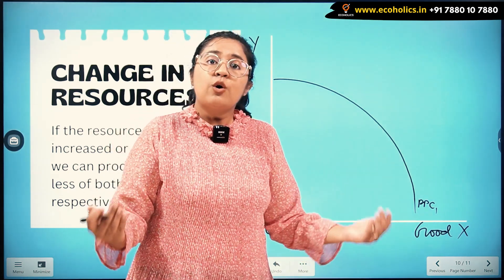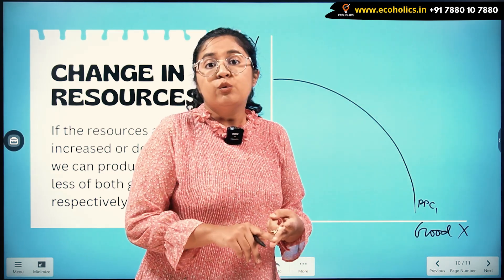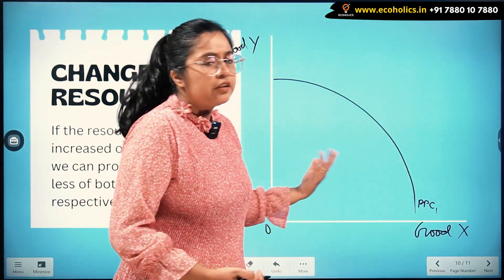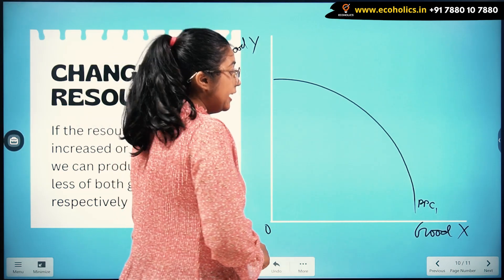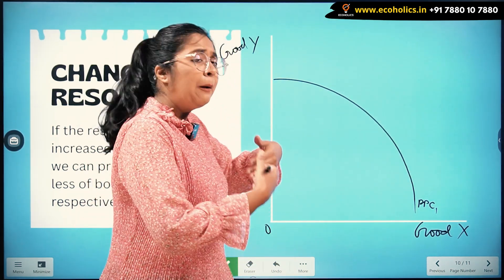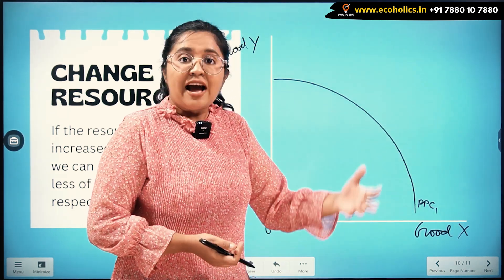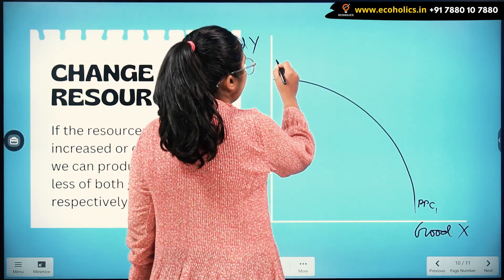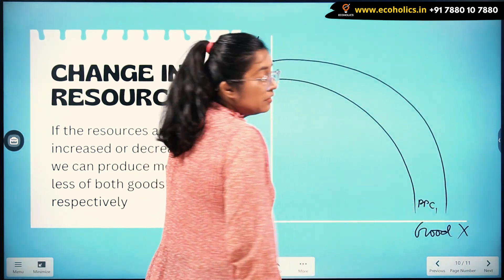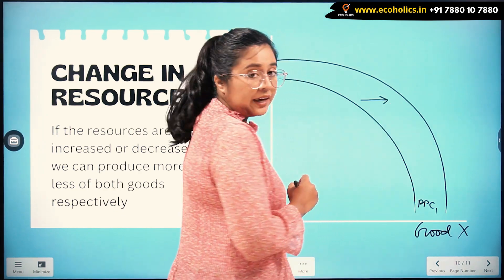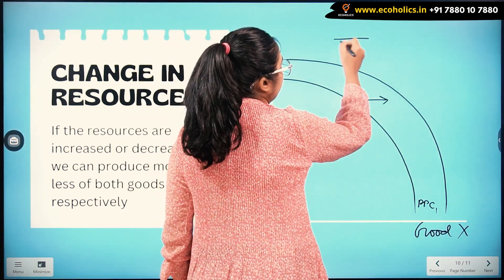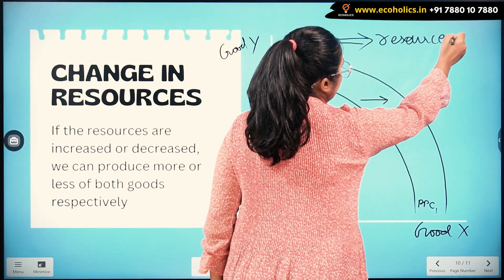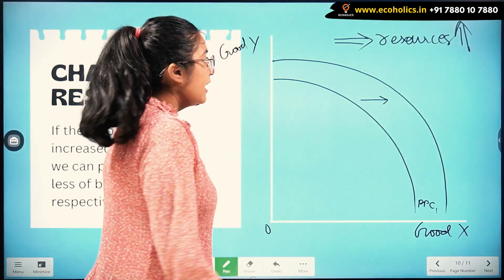Now let's say that the resources are more — resources can be capital, huge investments, raw material, more industries, anything. All of these resources have expanded in the economy, and now because we have more resources, a bigger possibility is present for the economy to have an increased amount of production for commodity X and commodity Y. So we are going to shift the PPC towards the right. This rightward shift means that resources have increased.